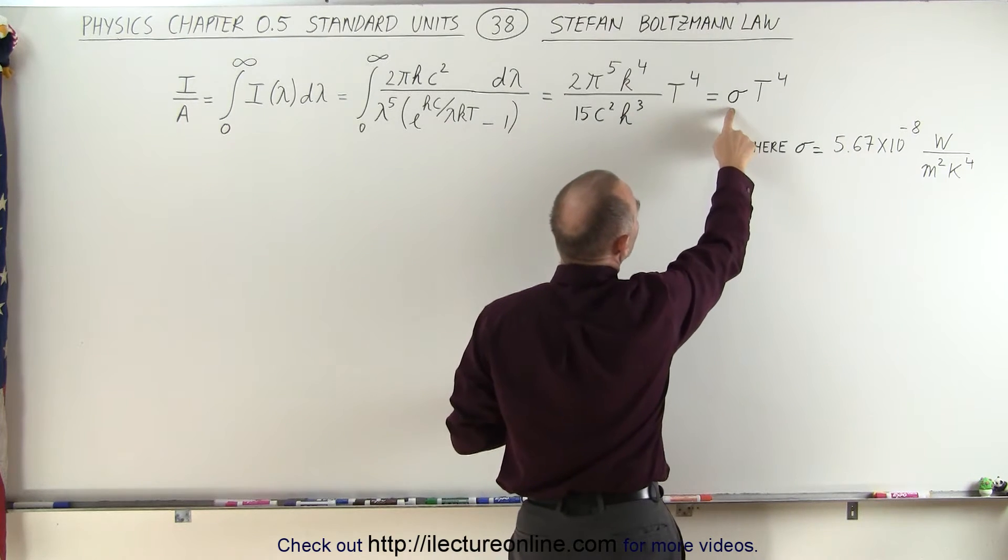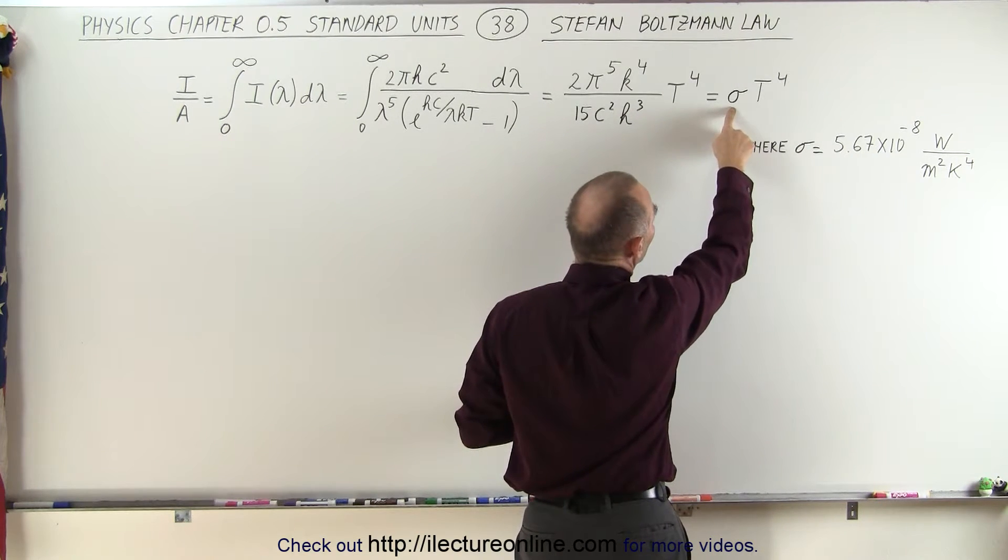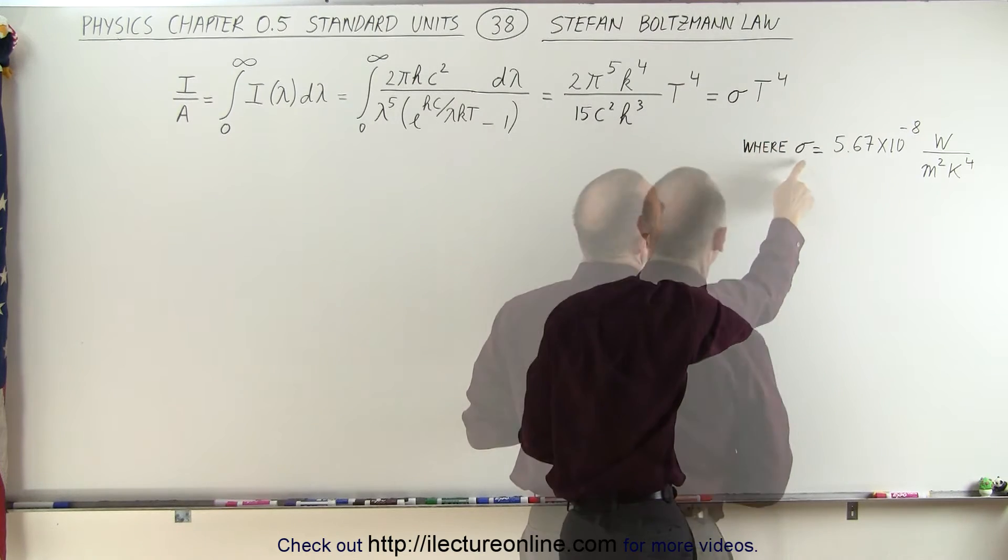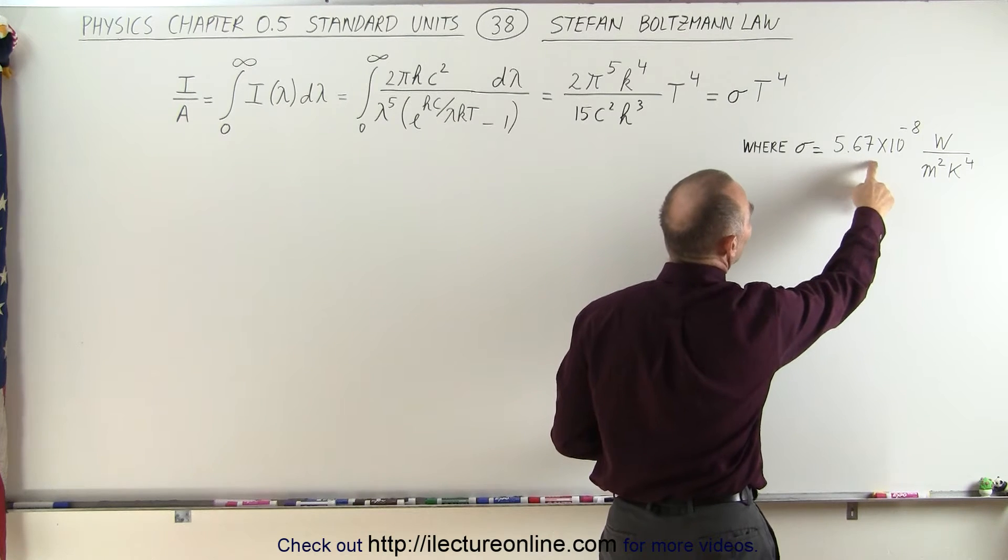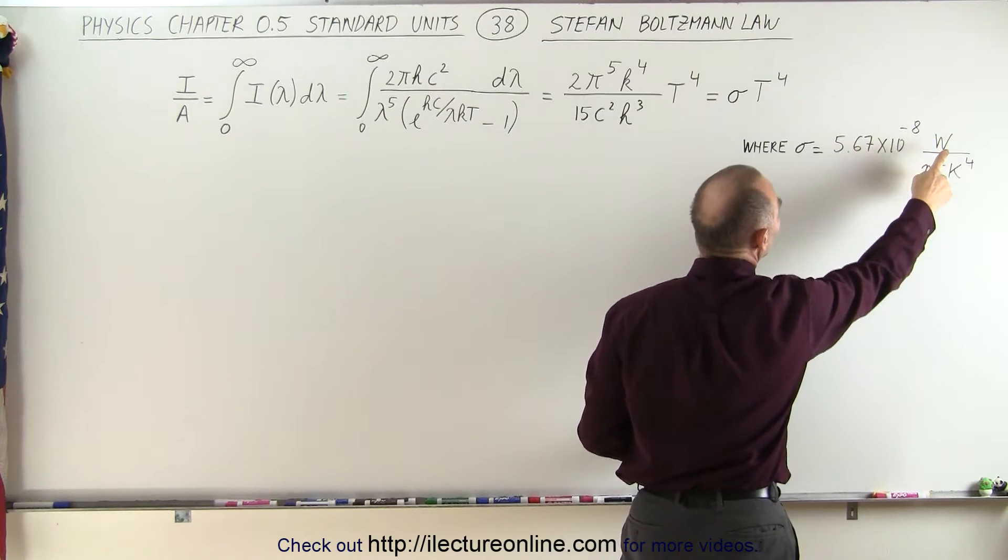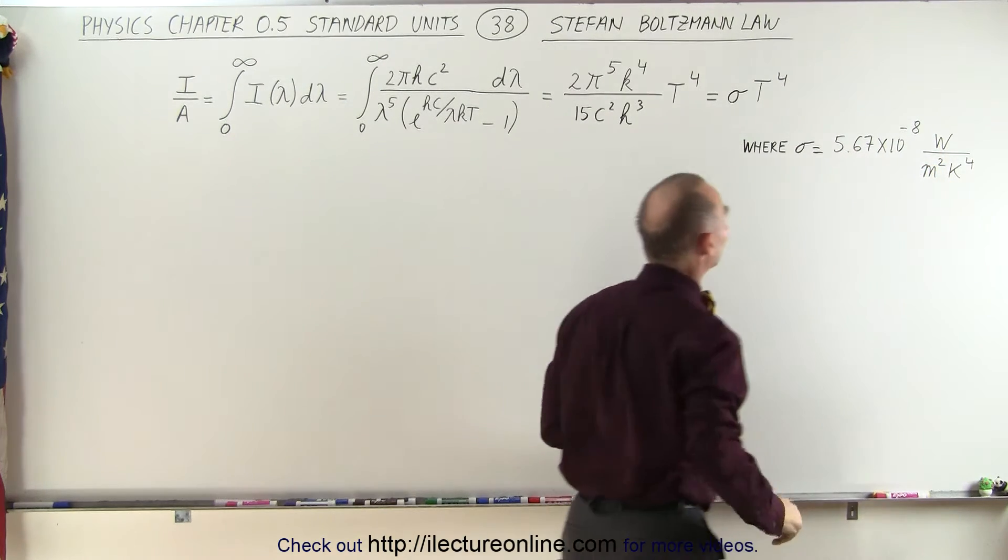Which can be written as the constant, the radiation constant, sigma, times T to the fourth, where the Stefan-Boltzmann constant is defined as 5.67 × 10^-8 watts per square meter per Kelvin to the fourth power.